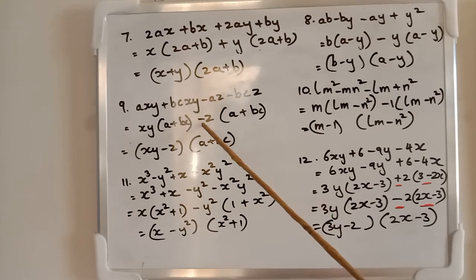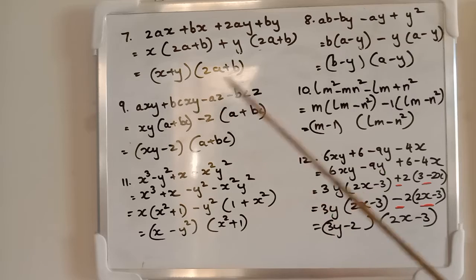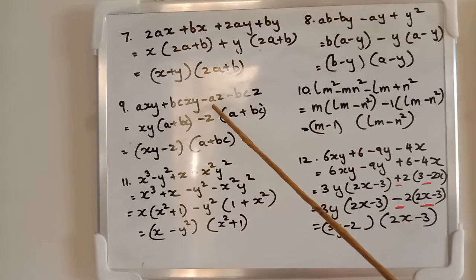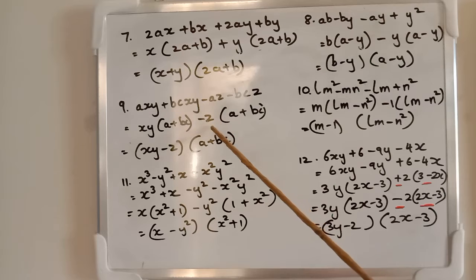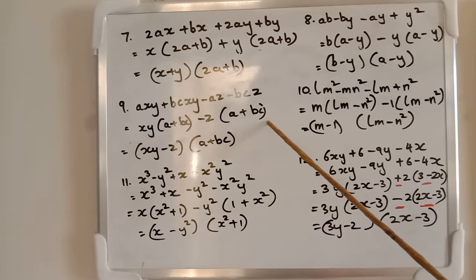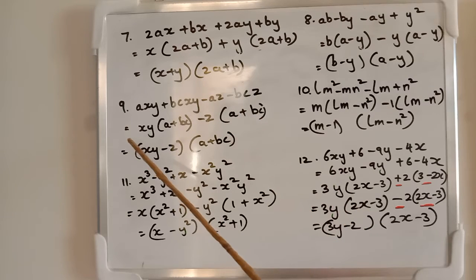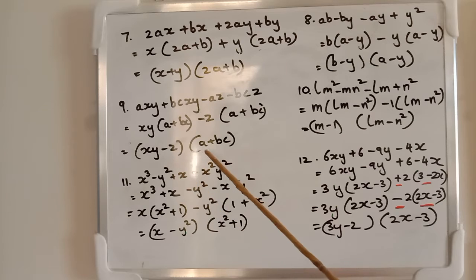Now here minus sign. Take out minus sign. Put z. Common factor z, right? -az - bcz. Take out -z, put a + bc inside. What will you get? (xy - z)(a + bc).